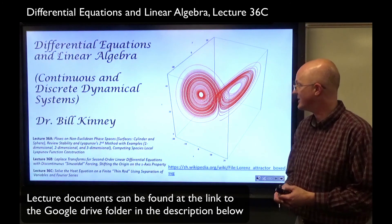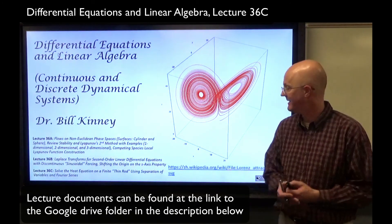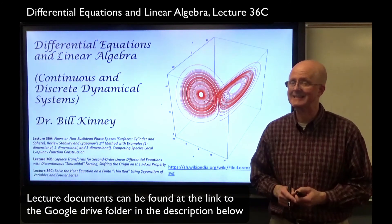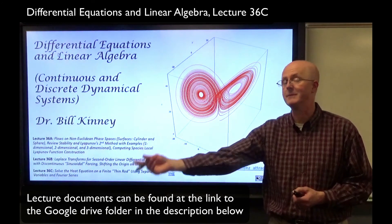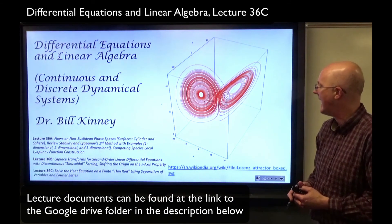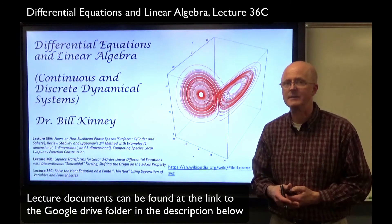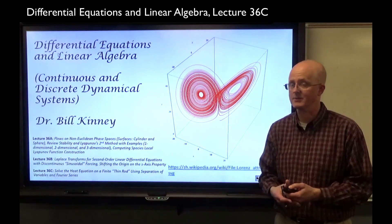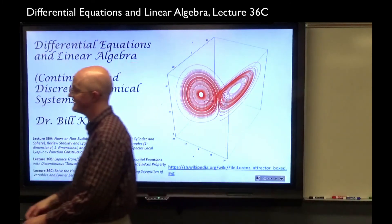We're going to solve the heat equation on a finite thin rod using something called separation of variables, which is not the exact same kind from the beginning of the course, but has a somewhat similar feel. And also using a Fourier series, as we've been talking about Fourier polynomials in terms of inner products recently. So now we're putting this stuff together.